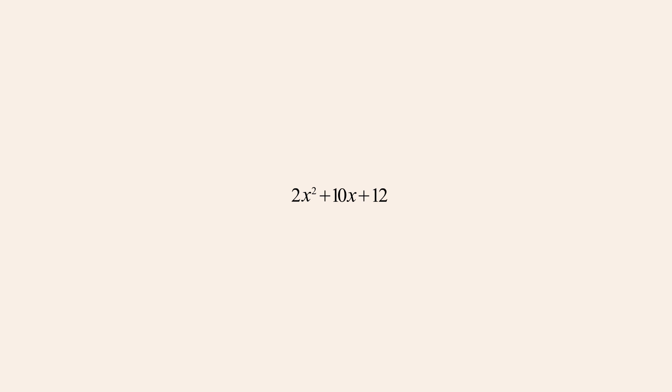For instance, let's say we wish to factor the quadratic expression 2x-squared plus 10x plus 12. Since two is a common factor of all three terms, we can write this expression as two times a quadratic with an x-squared coefficient of one. We can then factor the quadratic by inspection as we did in the previous lecture, where we determined that the factors were x-plus-two and x-plus-three.